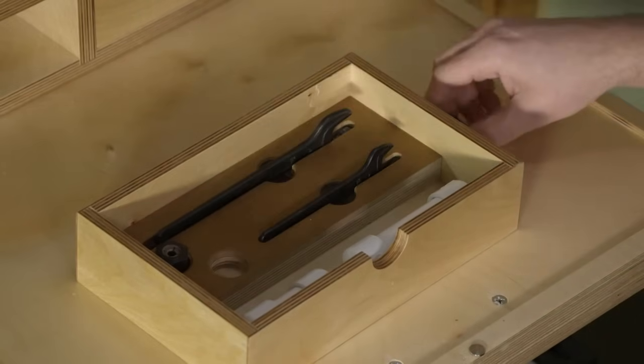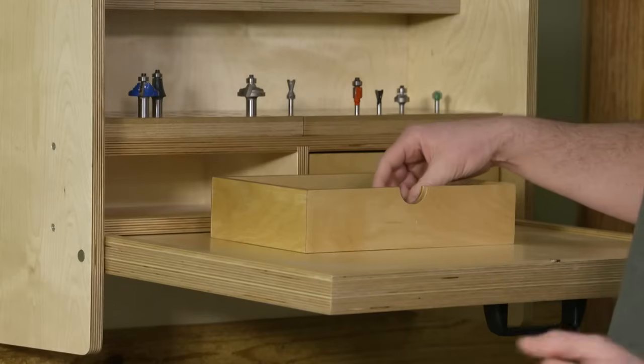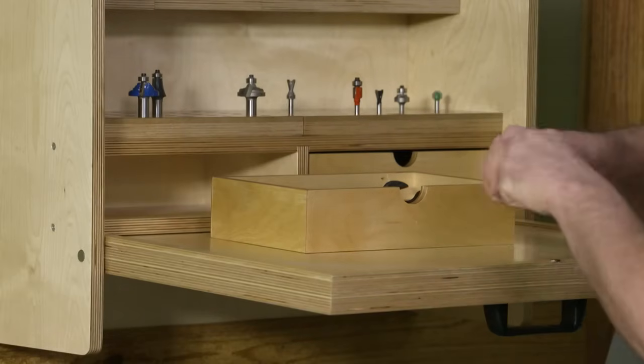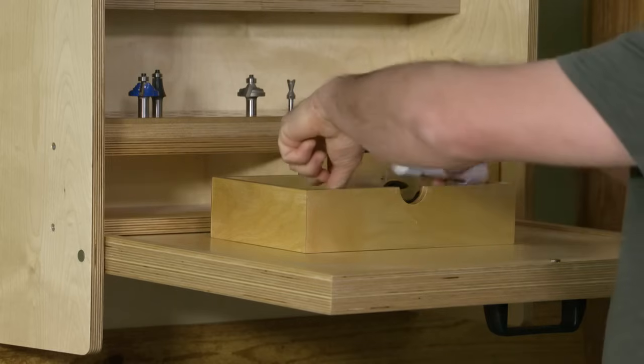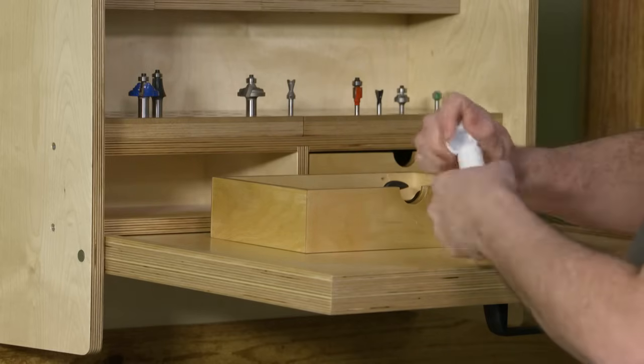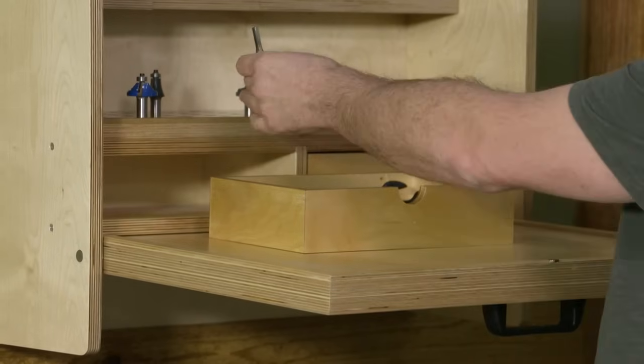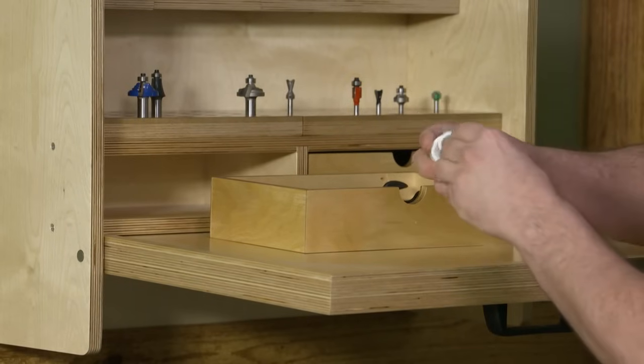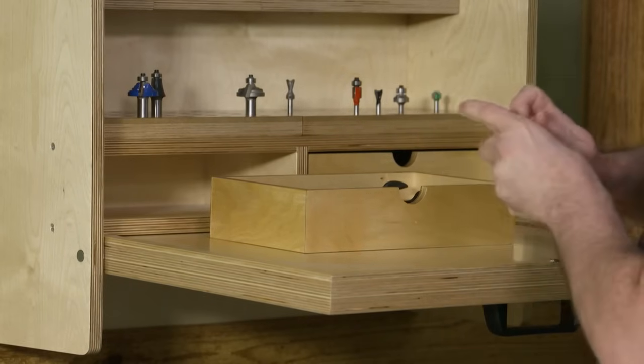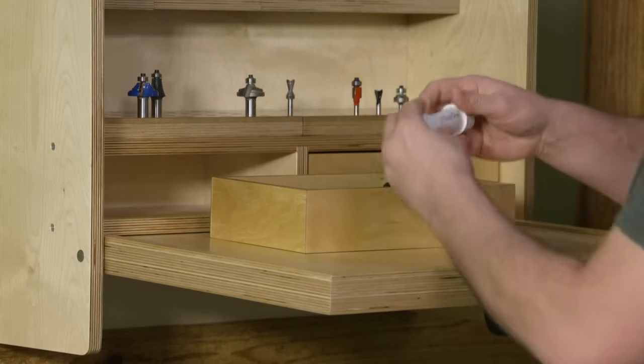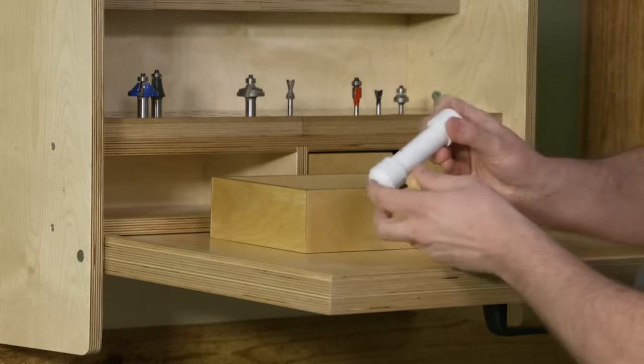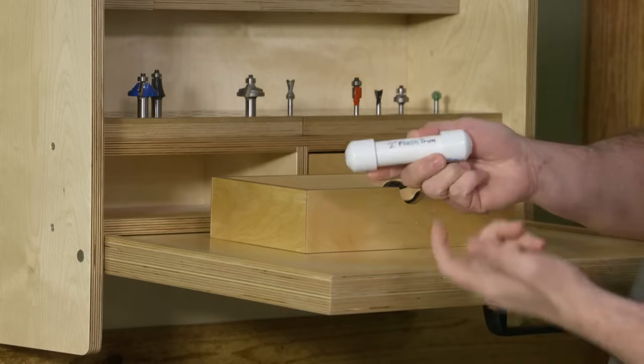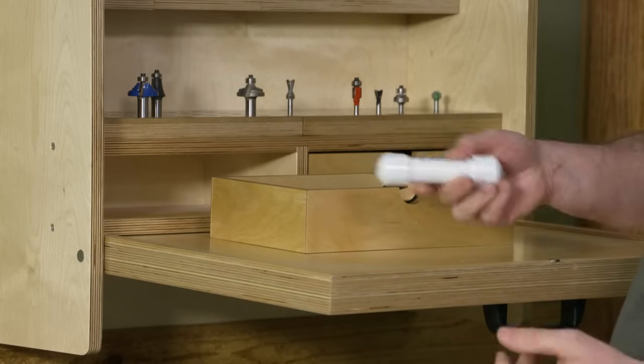You can make that for a drawer insert or you could make it just to sit on a shelf somewhere. Another little tip that we've picked up along the way is we have a lot of longer bits that we don't necessarily like to keep on there if they're too long. So we keep them in little PVC canisters like that, and then you can just write on the outside what's in there. We just put a couple of cotton balls on either end. It keeps them from rattling around.